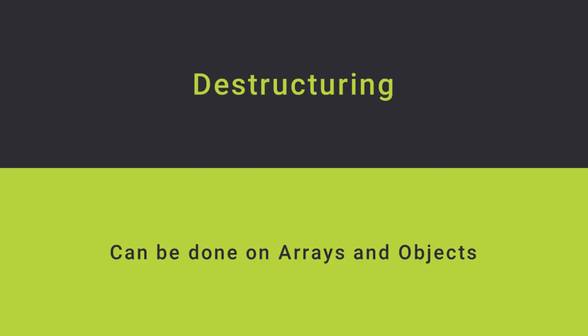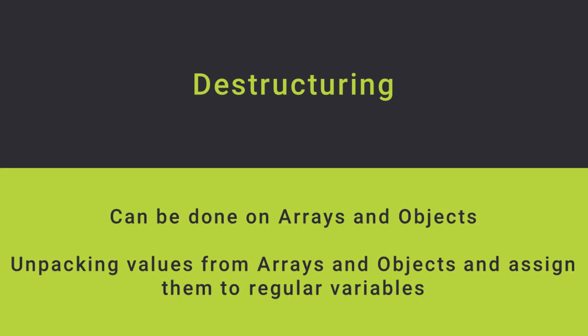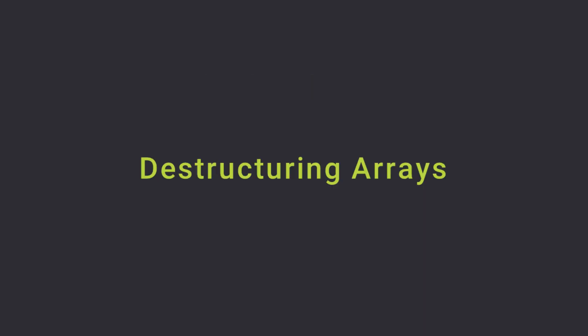Let's now look into destructuring. Destructuring is nothing but extracting values or properties from arrays and objects and assigning them to variables. It is a process you can perform on both arrays and objects, allowing you to unpack values and assign them to regular variables. First we'll see how to destructure arrays, then we'll move on to objects.